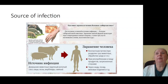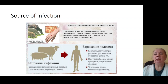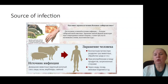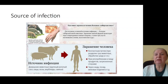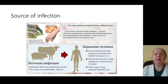Bacillus anthracis causes transformation to spores in the ground and keeps in the ground for many years. Then it penetrates to the skin of patients through wounds of the skin, transforms to vegetative forms, and causes formation of inflammation, alteration, and necrosis of the skin.